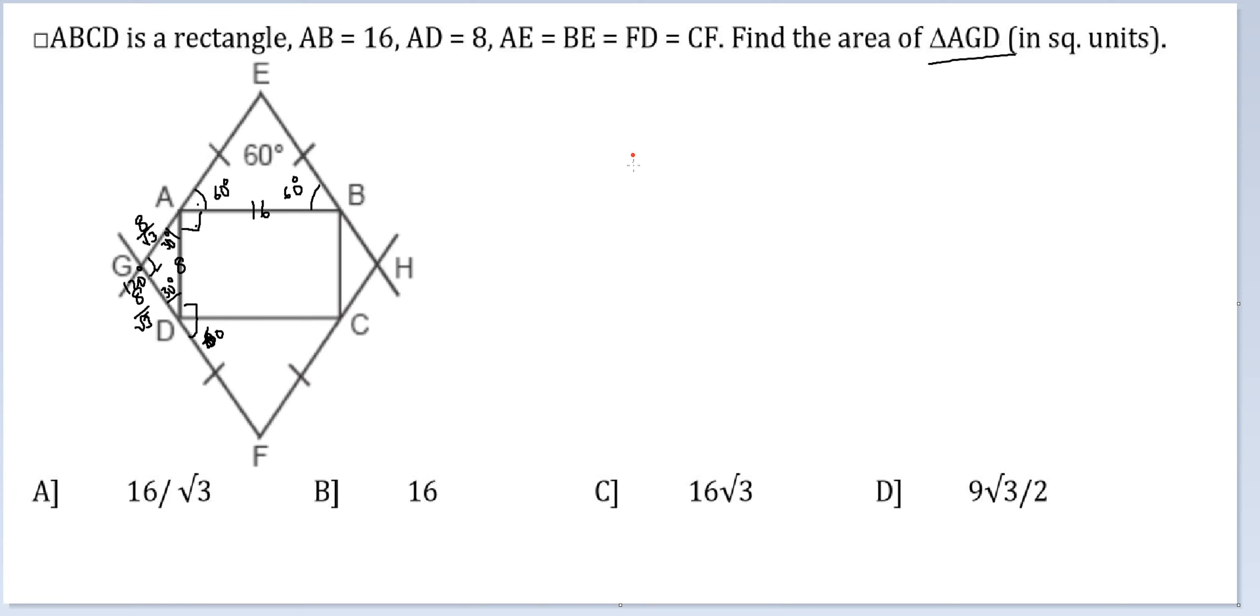So only area to calculate. So half into 8 by root 3, so half into 8 by root 3 into 8 by root 3 into sin 120 is what we are seeking. So half into 64 by 3 into root 3 by 2. Sin 120 same as sin 60.